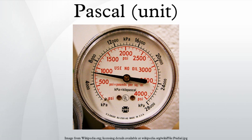Other older units of measure occasionally used for pressure are millimetres of mercury and millimetres of water. In the CGS system, the unit of pressure is the barye, which is equal to 1 decipascal. The older kilogram-force per square centimetre corresponds precisely to 98.0665 kilopascals, but is often rounded off to 100 kilopascals in practice.